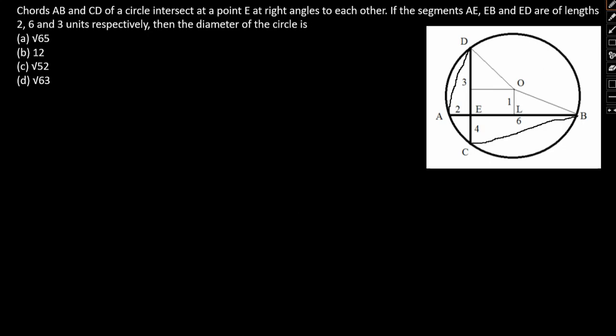then triangle ADE, ADE being this, ADE and triangle BCE, BC being this, they will be similar. 90 degree side common and the distances also in proportion. So these triangles will be similar.